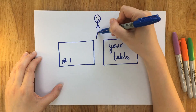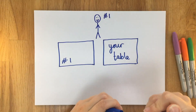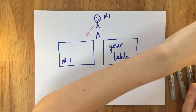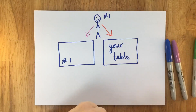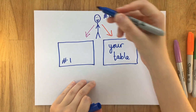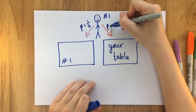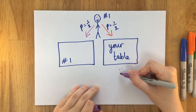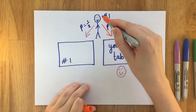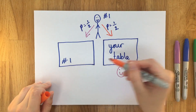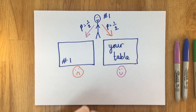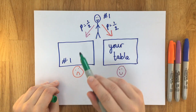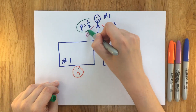Guest number one is going to arrive first and there are clearly only two different scenarios that can take place. First of all they could be sat at their own table, table number one, and secondly they could get sat at your table. Because both things happen randomly, we know that they're both going to happen with probability a half. When you arrive, if guest number one is sat at table number one then your table is the one that's free and you're going to get sat there. In the scenario where guest number one is sat at your table, the one that's left for you is going to be table number one, so you don't get the table that you booked.